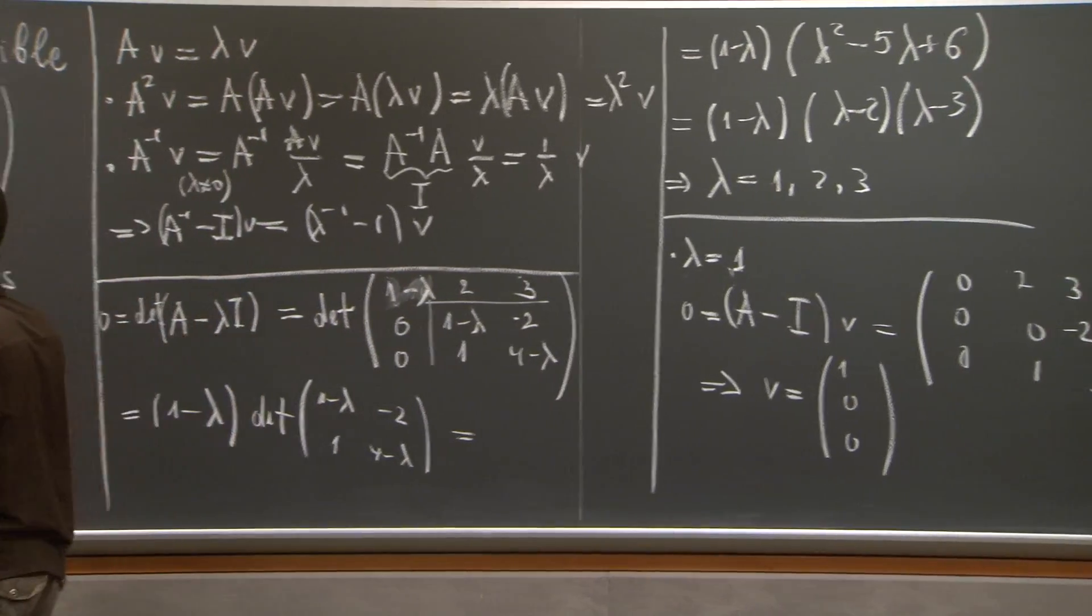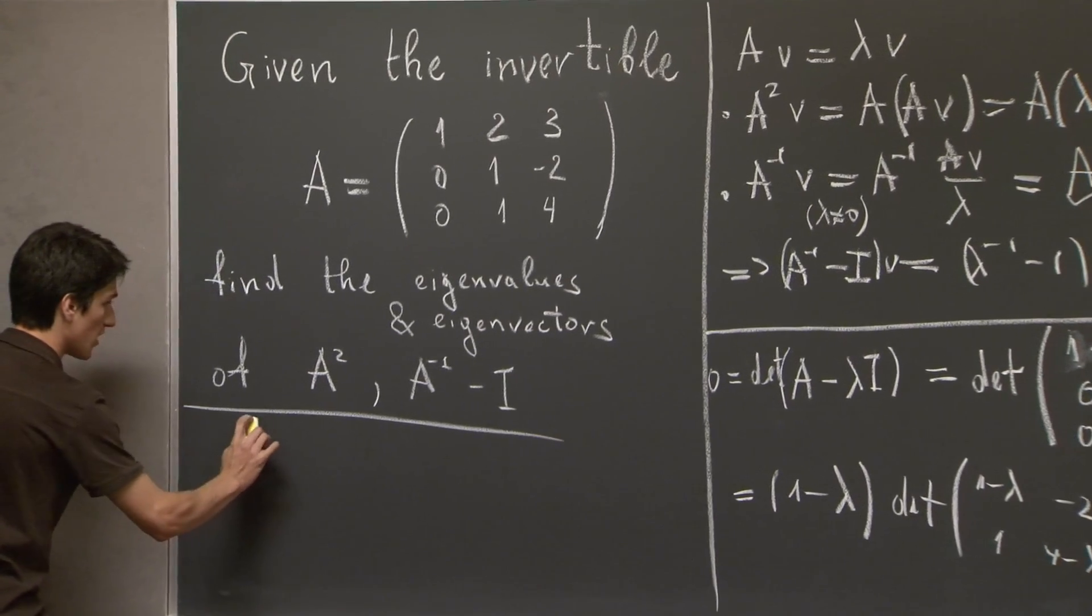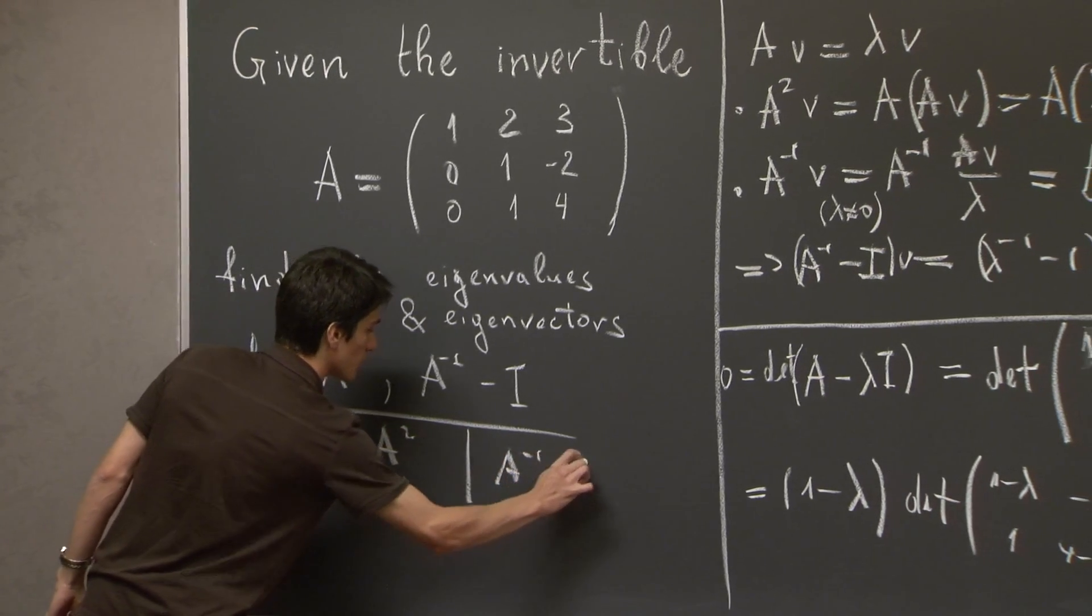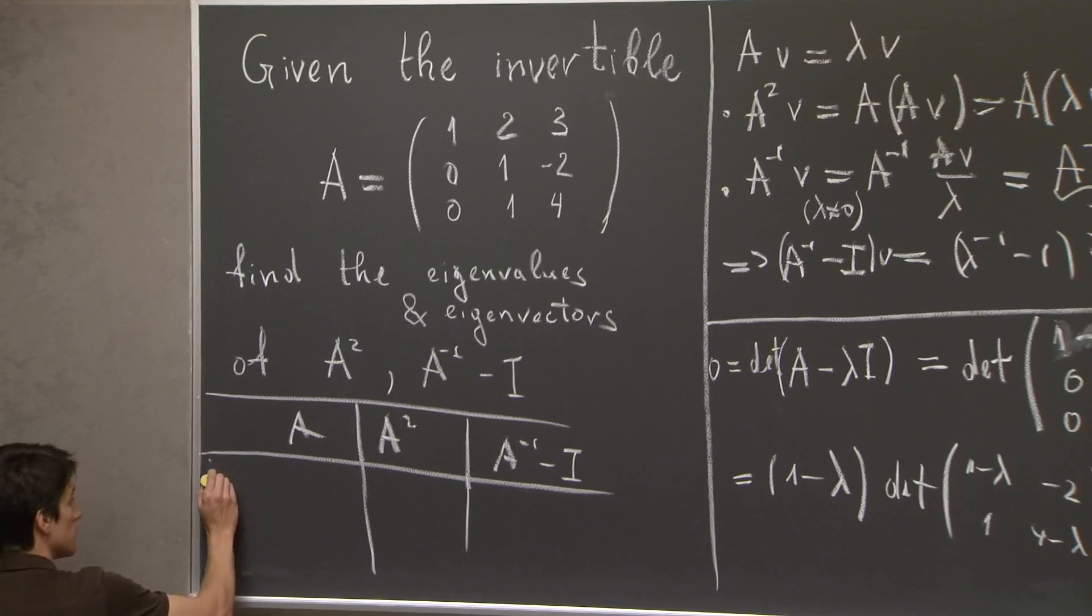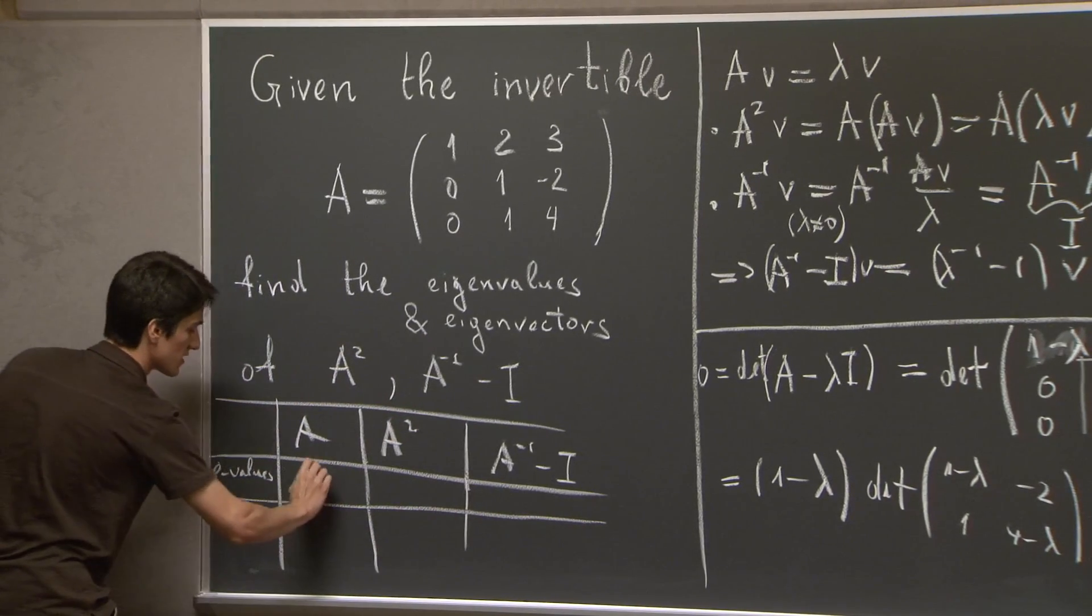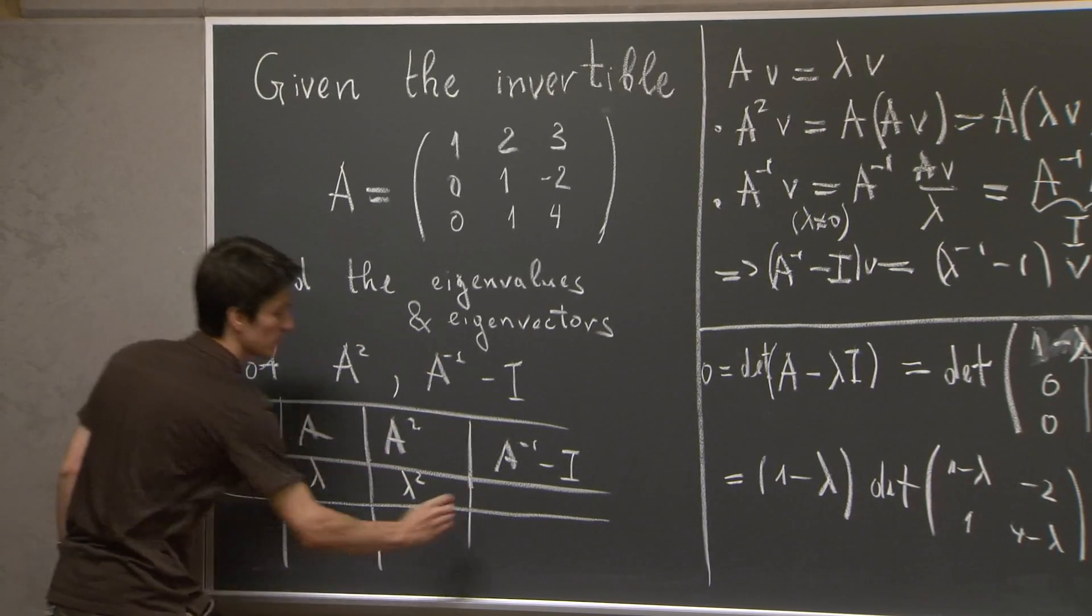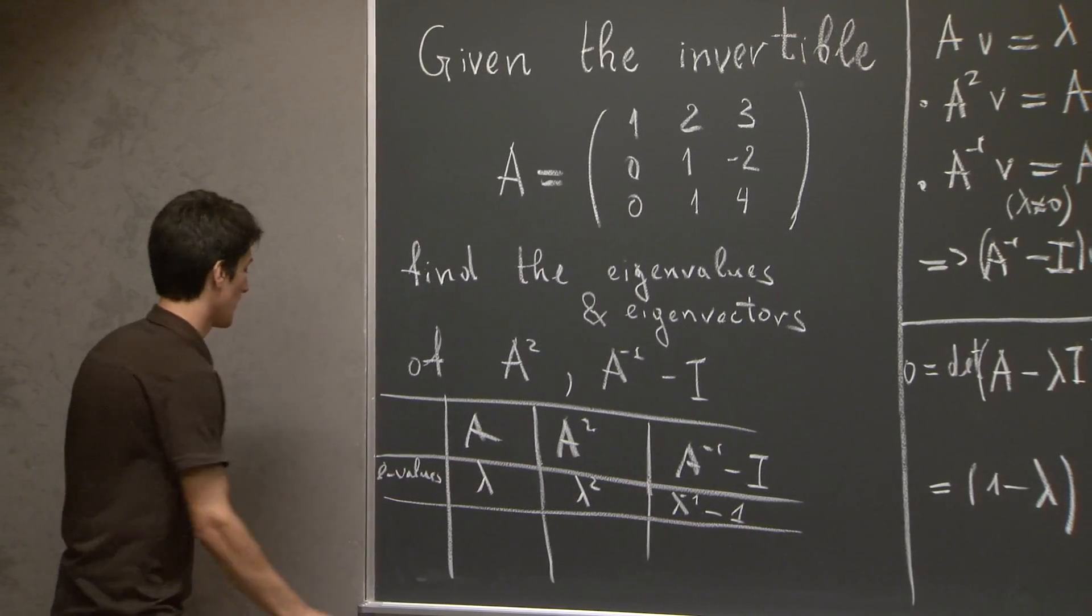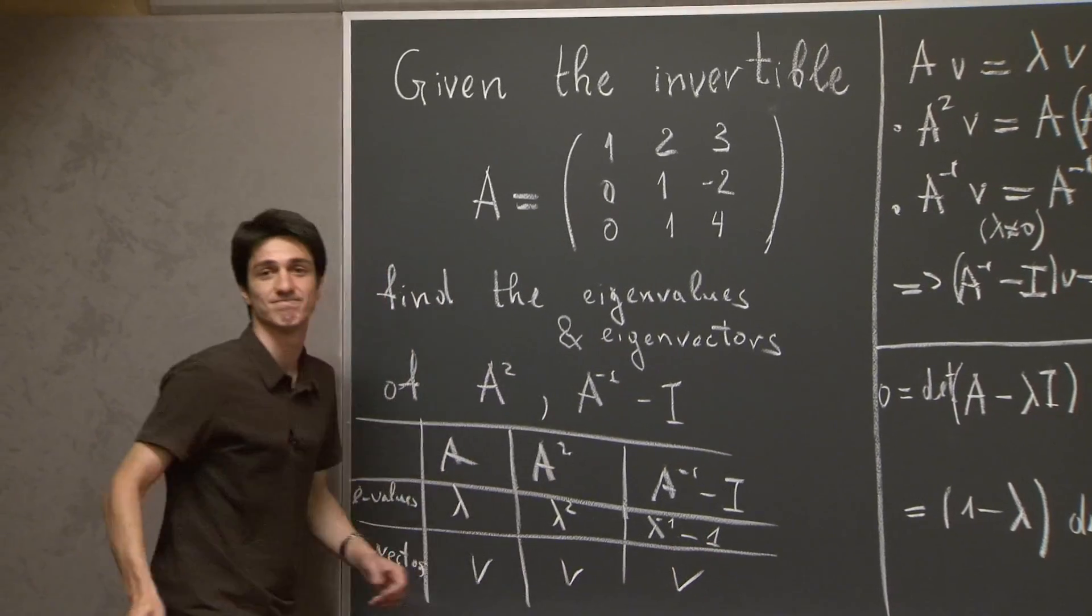And in the end, let me go back here, so I'm going to put our results in a little table. So A squared, A inverse minus the identity, so the first row will be eigenvalues. So if lambda is an eigenvalue for A, then we saw that lambda squared will be the eigenvalue for A squared and lambda inverse minus 1 will be the eigenvalue for A inverse minus the identity. And the eigenvectors will be the same. We're done.